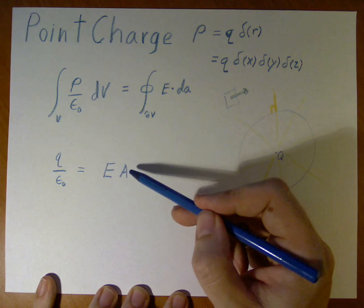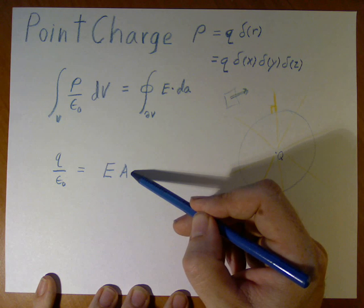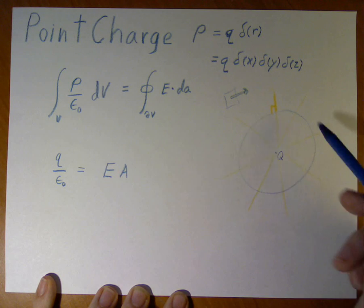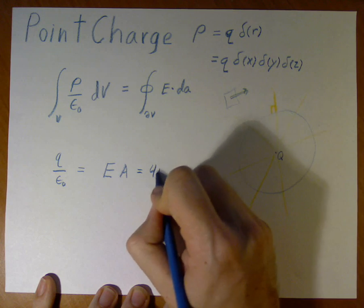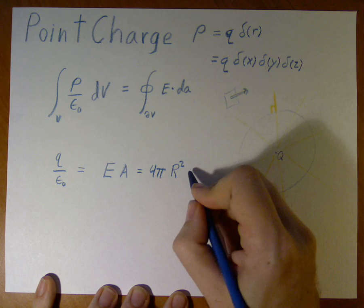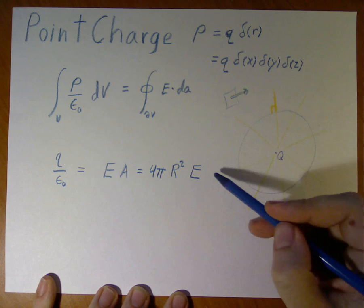And that means we can take, since the electric field is equally strong everywhere and it's always perpendicular, we can just write the electric field times the total area. Now, the surface area of a sphere is 4 pi r squared, and of course, our electric field.